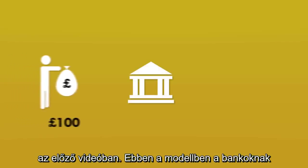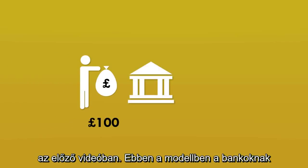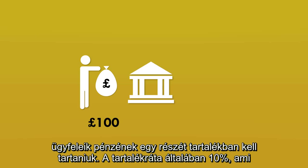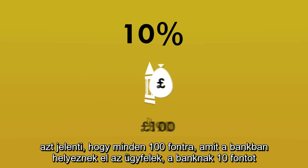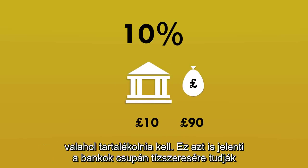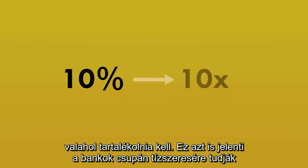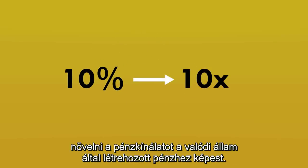So what actually limits how much money the banks can create? You've probably seen the standard multiplier explanation of fractional reserve banking discussed in an earlier video. In this model, the banks have to keep a percentage of their customers' money in reserve. The reserve ratio given is usually 10%, which means that for every £100 paid into a bank, the bank must keep £10 in reserve, limiting the banks to expanding the money supply up to 10 times the amount of real government-created money.